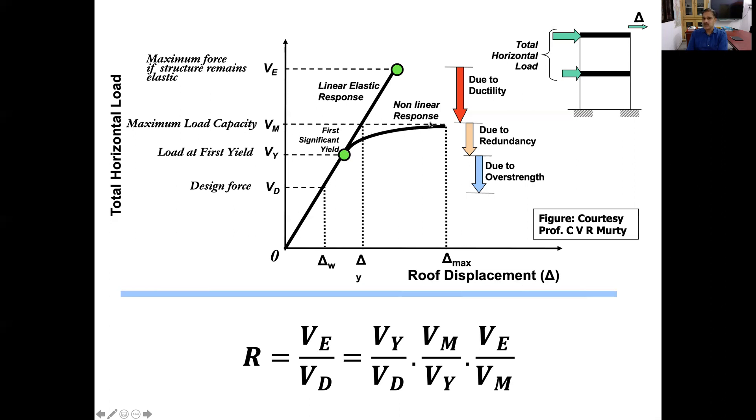After that, the load-deformation graph will not drop down, but the curve will bend, meaning the stiffness of that structure reduces. It still further goes up to the peak, so continuously stiffness reduces. This branch of the curve is because of the redundancy present in the structural system. After a peak, then the curve drops down.